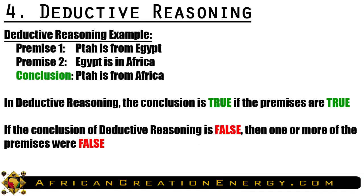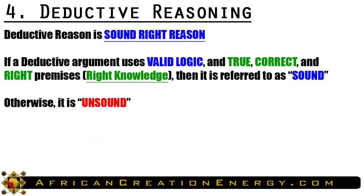Deductive reasoning is the mental process of deriving specific logical conclusions from ideas and concepts in the mind, facilitating movement from mental concepts in the rational world to experiential information in the empirical world. It is called top-down logic and its nature is predictive. An example: Premise one: Pataa is from Egypt. Premise two: Egypt is in Africa. Therefore, Pataa is from Africa. In deductive reasoning, the truth of the premises guarantees the truth of the conclusion. If the conclusion is false, then one or more premises were false. A deductive argument using valid logic and true premises is referred to as sound; otherwise, it is unsound.